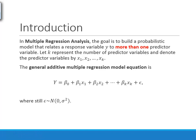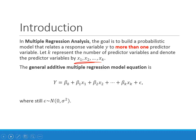The goal in multiple regression is to do the same thing — build a linear model — but now we're going to have more than one predictor variable. We still have one response variable y, but now we have k of them: x1, x2, up to xk. We're still assuming normal errors, so the inference has the same foundation as before.